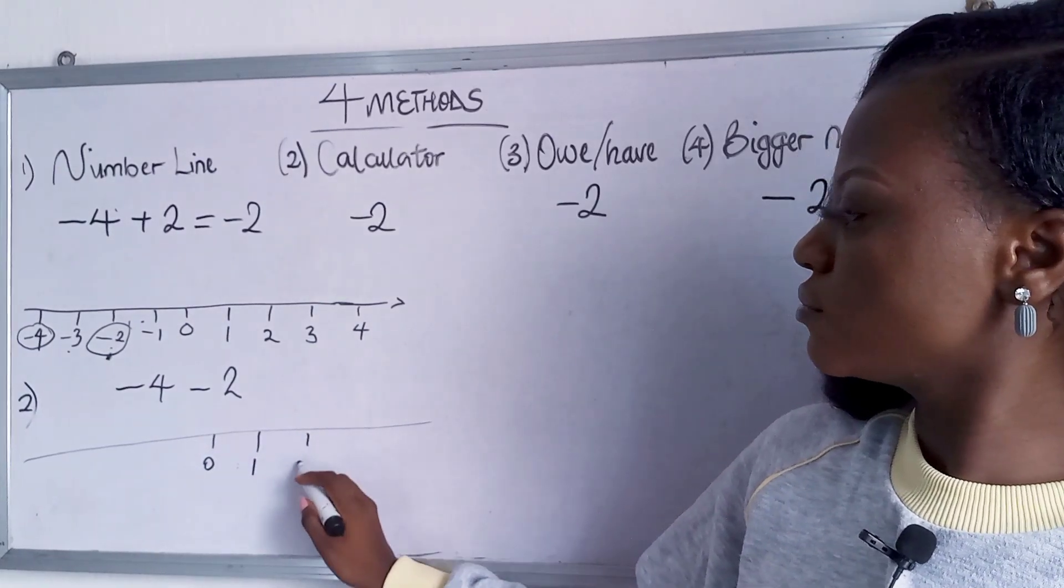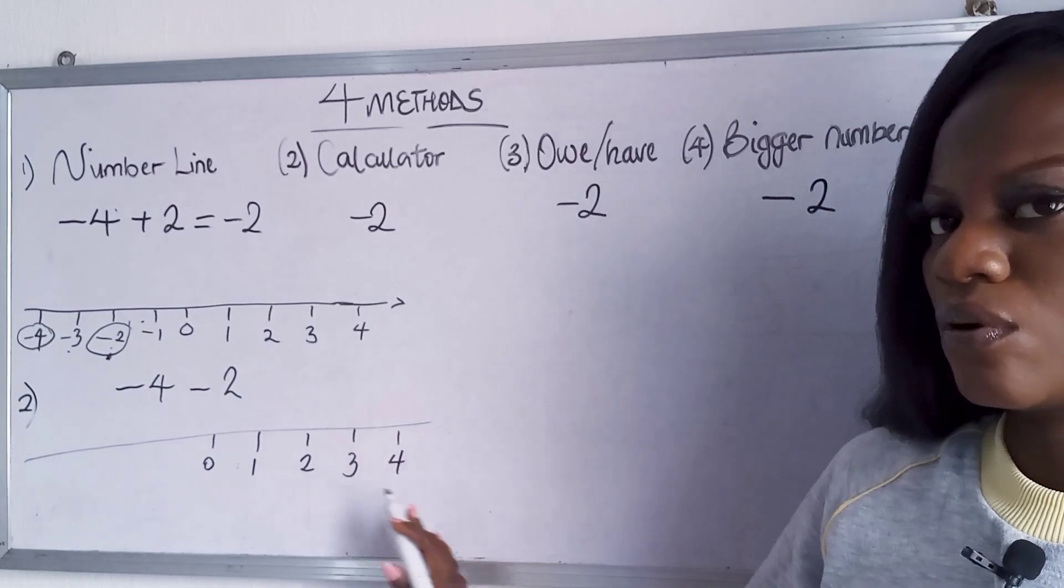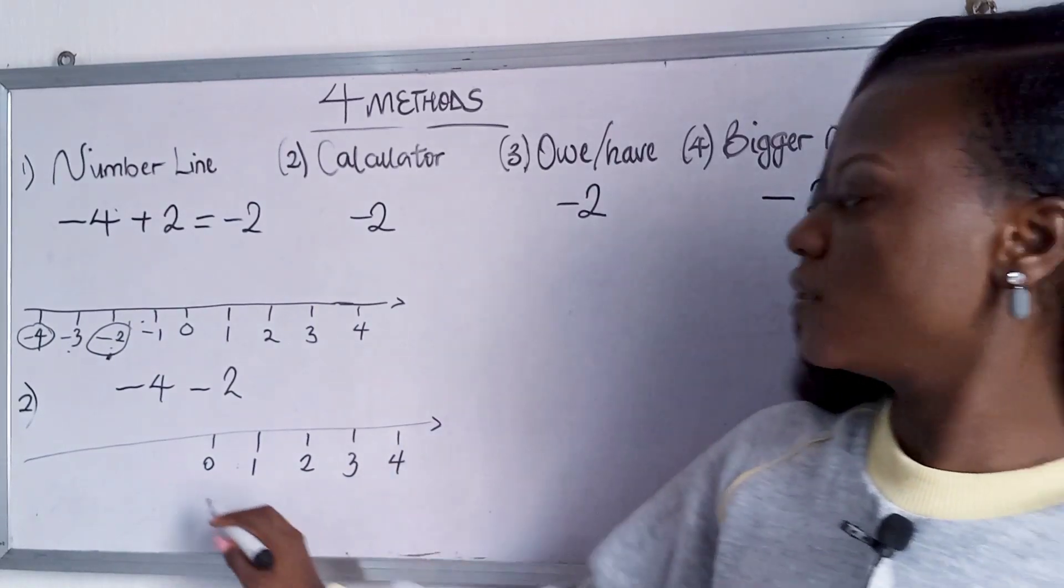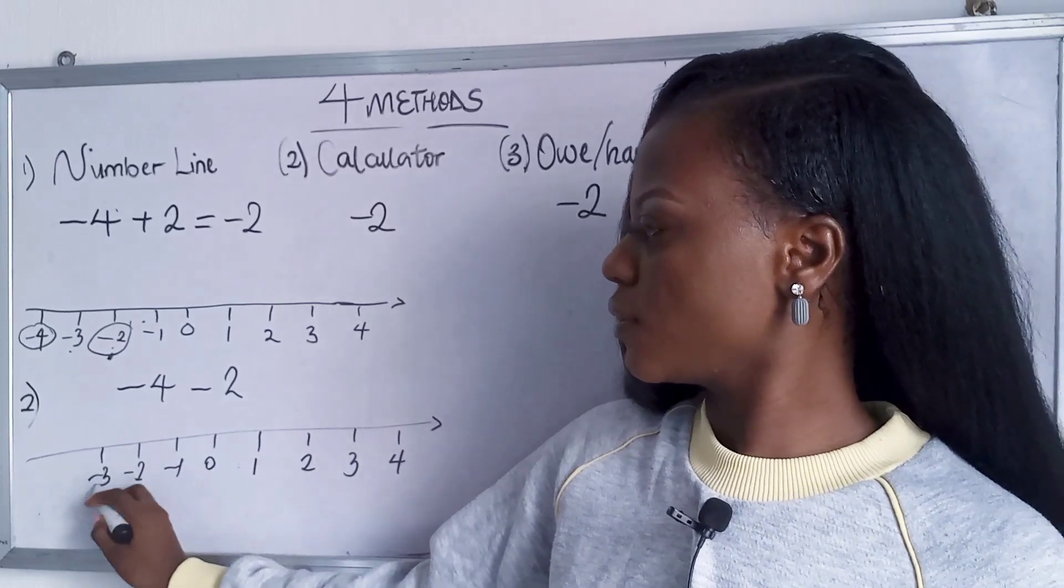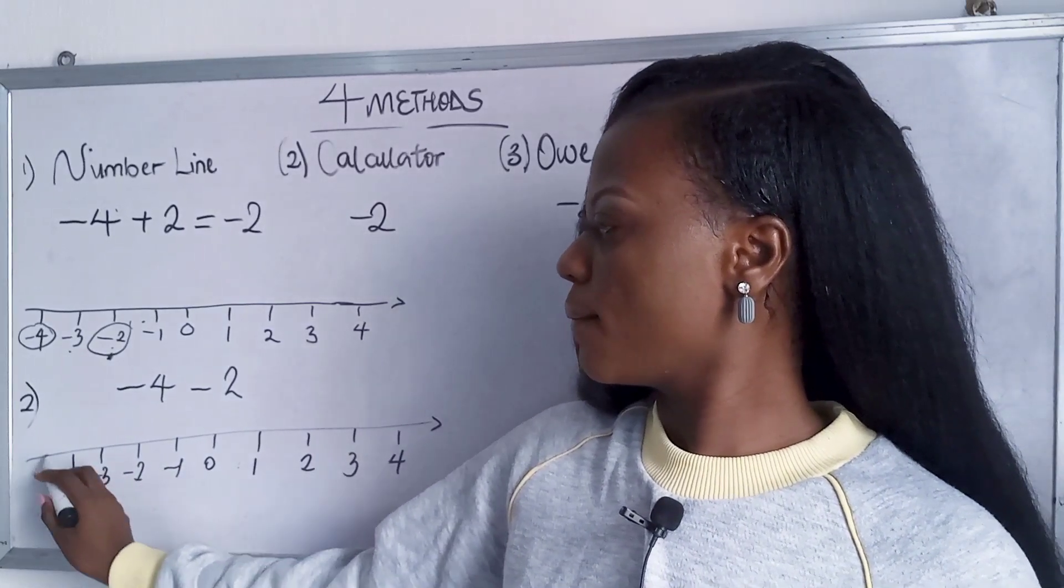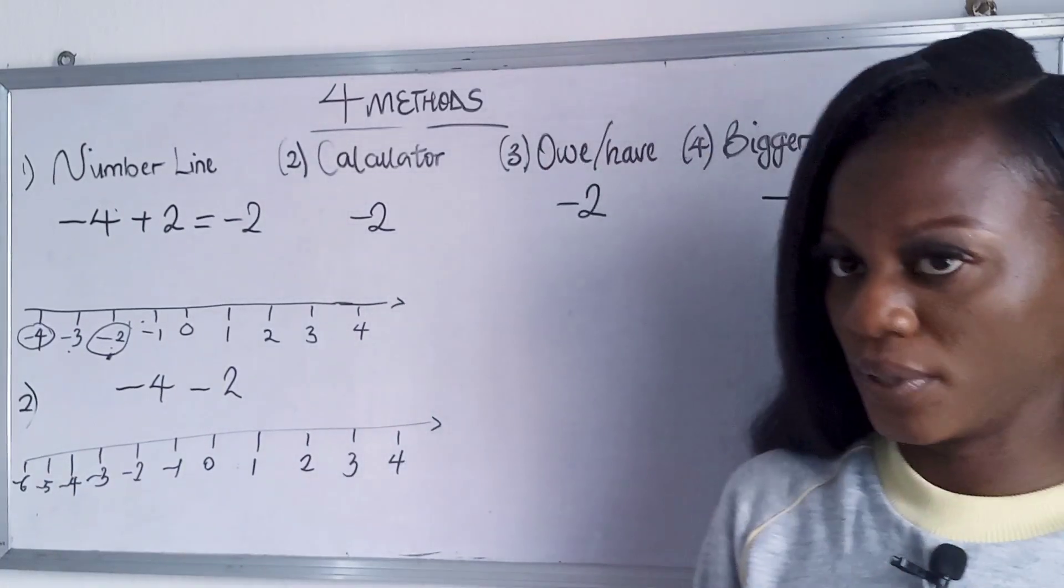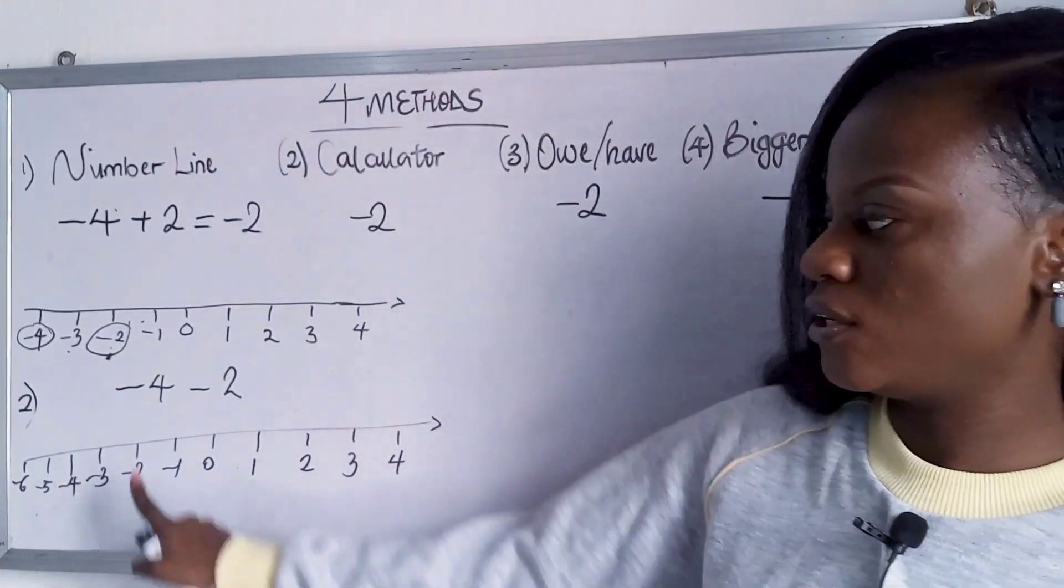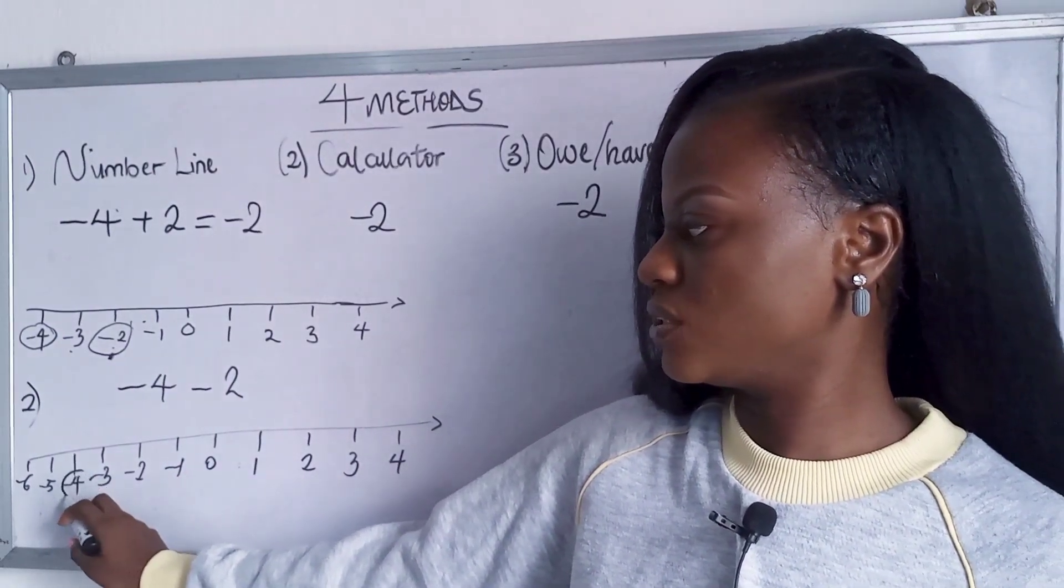So you have one, two, three, four, continuous. And then you have minus one, minus two, minus three, minus four, minus five, minus six. Okay? Now remember we said minus four.